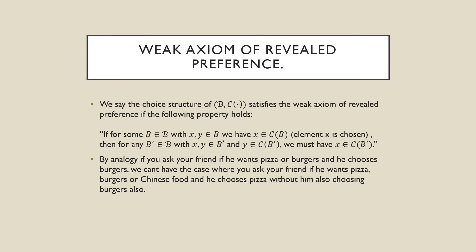This brings us to a thing called the weak axiom of revealed preference. We say that the choice structure script B and C satisfies the weak axiom of revealed preference if the following property holds: if for some B in script B with X and Y in B, we have X in C(B) — meaning X is chosen out of a particular budget set — then for any B prime, some different budget set with X and Y in that budget set, if we have Y being chosen from this alternative budget set, we must have X being chosen along with it. By analogy, if you ask your friend if he wants pizza or burgers and he chooses burgers, we can't have the case where you ask your friend if he wants pizza, burgers, or Chinese food and he chooses pizza without him also choosing a burger option as well.